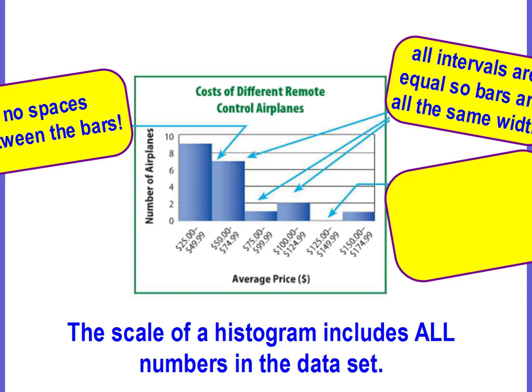All intervals are equal, so the bars are the same width. You'll notice that all the intervals are equal. They're the same amount. One isn't $5 and one is $10. They're all equal amounts.